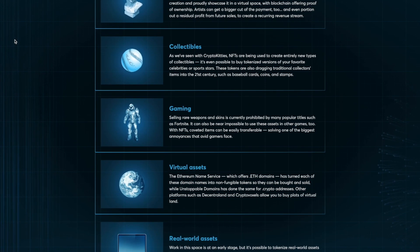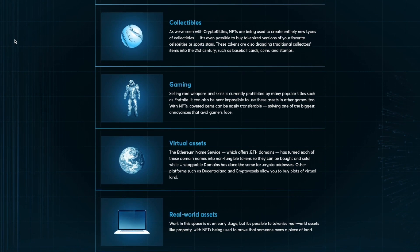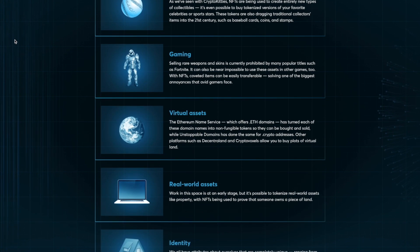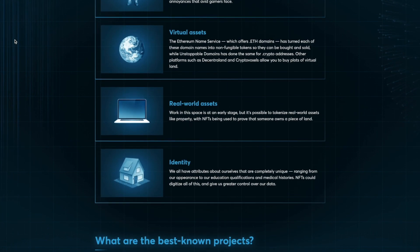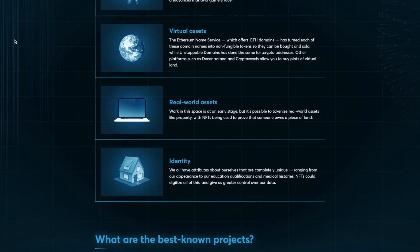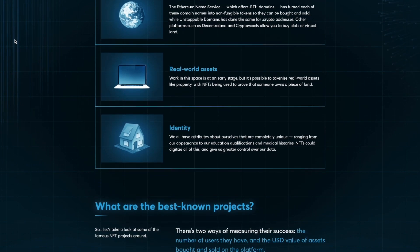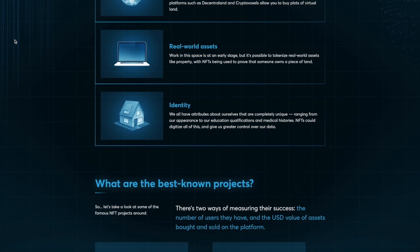Another use case is virtual assets — things like .eth domains, and platforms like Decentraland where you can have digital property and digital real estate in a virtual world. Real-world assets include tokenized real estate, tokenized gold, silver, and stocks. And digital identity covers things like medical records and education qualifications. Lots of cool things are expected with non-fungible tokens.